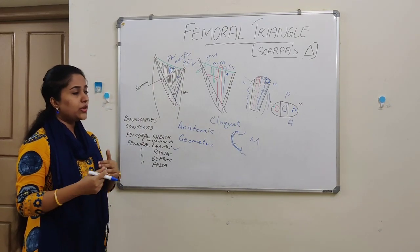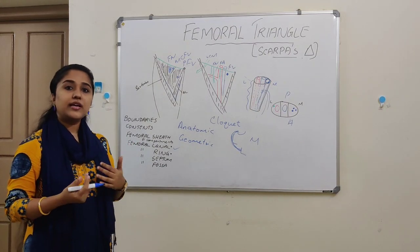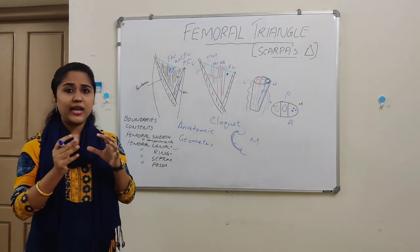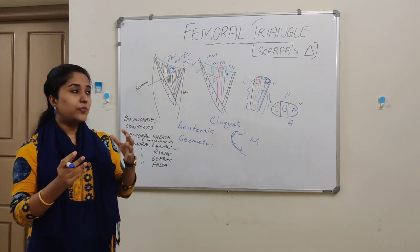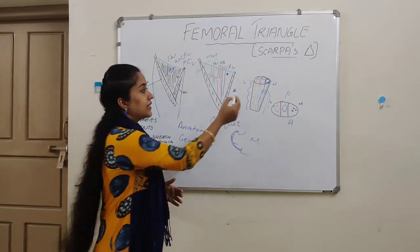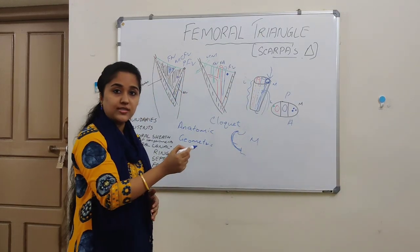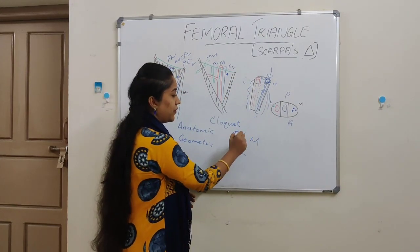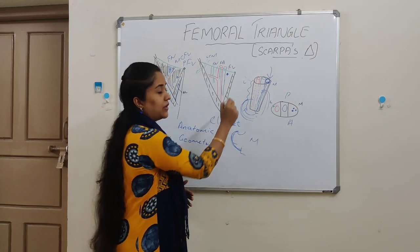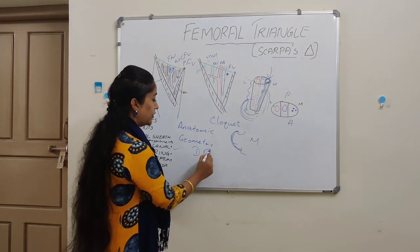Now we will see the direction of femoral hernia. Femoral hernia means the protrusion of abdominal contents through any defect, along with the parietal peritoneum. The contents can come through the femoral ring into the femoral canal — moving downwards — then forwards through the saphenous opening, and then upwards toward the inguinal ligament. So the direction of femoral hernia is downwards, forwards, and upwards.